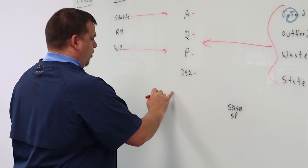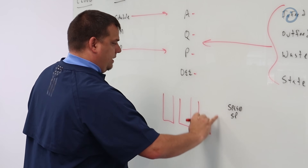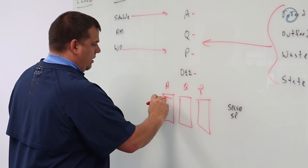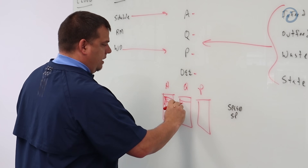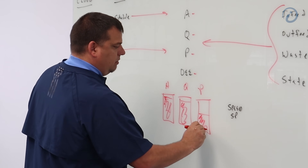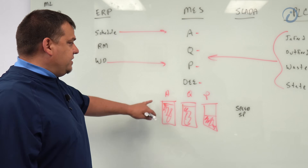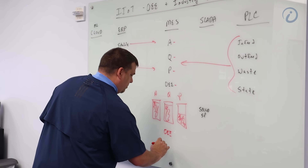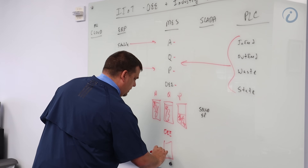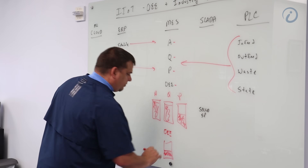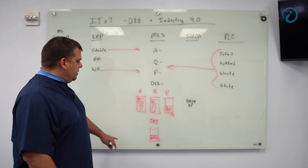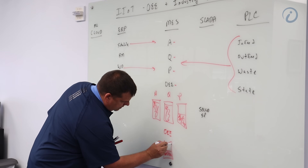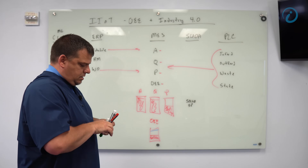The ERP system contains the whole schedule for the entire manufacturing facility. The operator is looking at the MES system and the SCADA system. The PLC is pushing values into the MES system, giving you availability, quality, performance, and OEE. He has a dashboard showing availability, quality, and performance. But let's say the performance number is really low — 50% — which gives him a low OEE number.